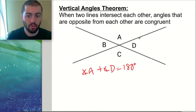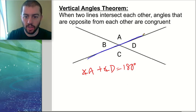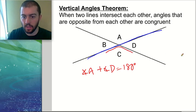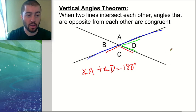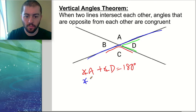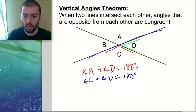The second step of our proof is to use the other line. If we make a straight line between C and D, then we can say that angle C and angle D are also going to add up to 180 degrees, because together they make this blue straight line. So we can say angle C plus angle D equals 180 degrees.